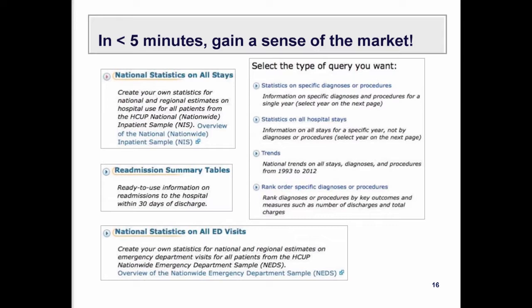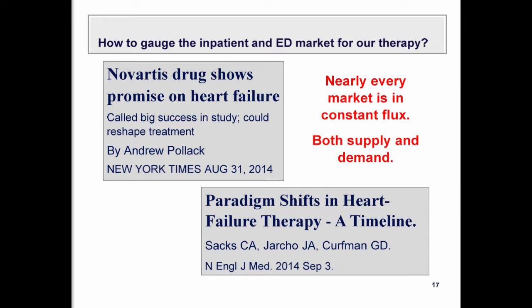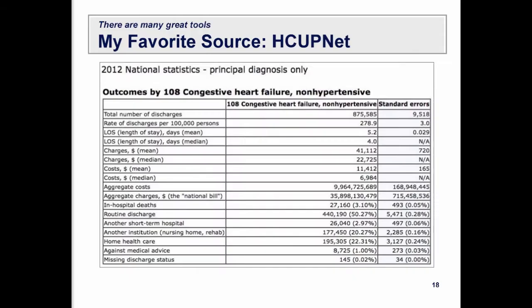If you just Google HCUPnet it will come right up. You can look by diagnosis, by procedure, and get statistics on all hospital stays. You can look at trends going back to 1993, rank diagnoses or procedures, look at ED visits, and look at readmission rates. It's just a fabulous tool — one of ten databases I'd love to tell you about. If you want to talk about where to get data for due diligence, email me.